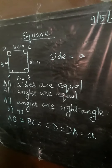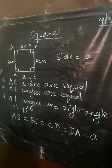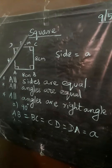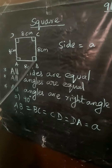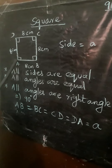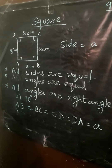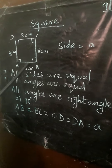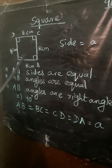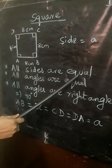Okay students. Next we will learn about square. Square has four sides: A, B, C, D. In a square, all four sides are equal.